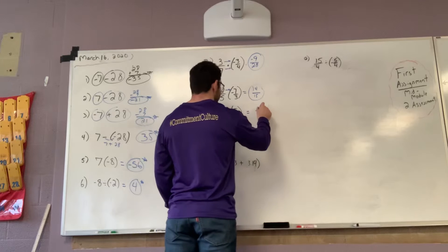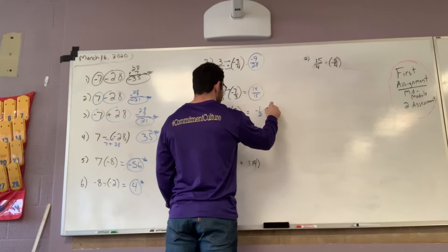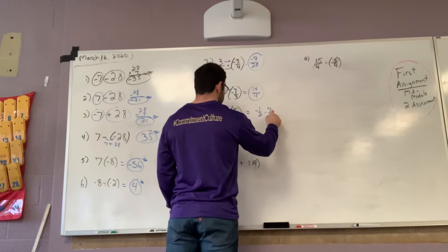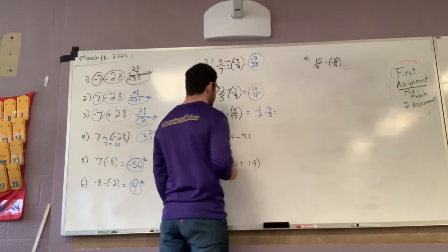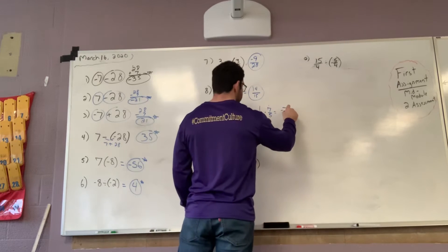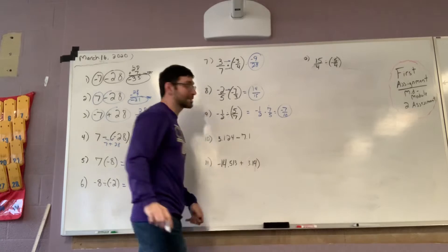Keep change flip. When it's division in fractions, we keep the first, change the sign, and flip the last one. So that gives me negative 7 tenths. Once again, I cannot simplify. We leave it.